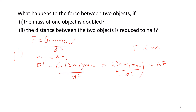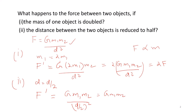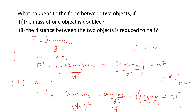Now the second case: the distance between the two objects is reduced to half, so d becomes d/2. Then F' = G·m1·m2/(d/2)² = G·m1·m2/(d²/4) = 4·(G·m1·m2/d²) = 4F. When the distance is reduced to half, the force becomes 4 times, because force is inversely proportional to the square of the distance.